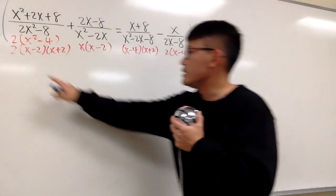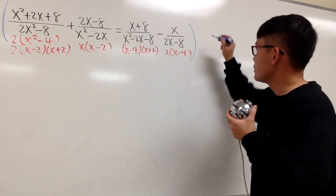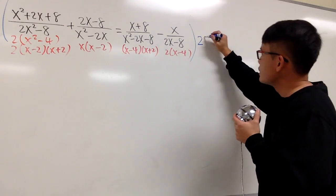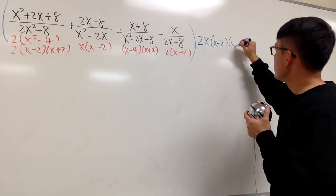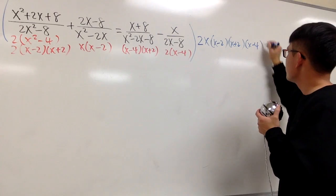We need to put a big parentheses. We see this 2 and that 2 in common. Put it down right here. We have this x multiplied by x, x minus 2. Put that down right here. x plus 2, x minus 4 right here. Multiply it by that as well.